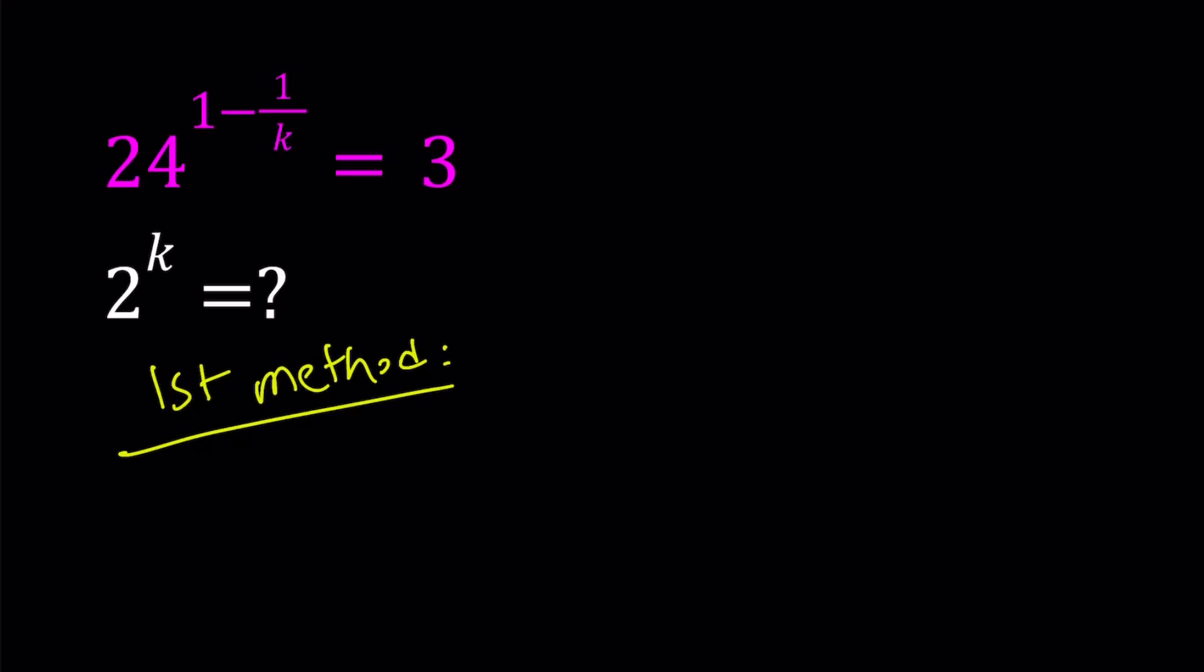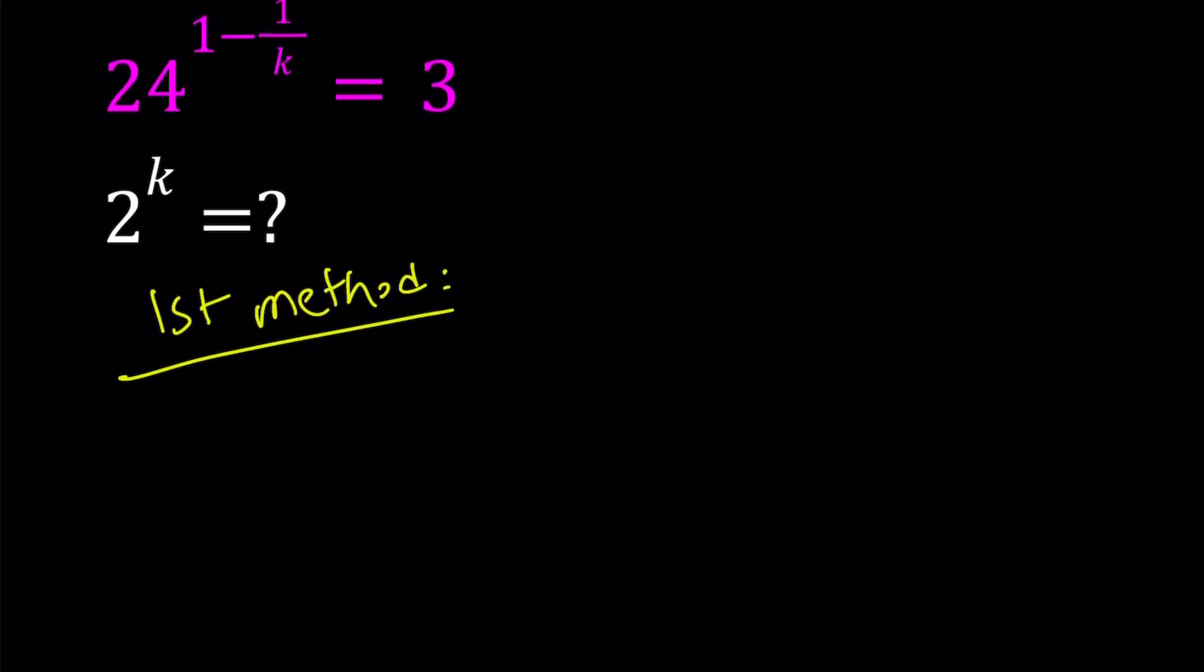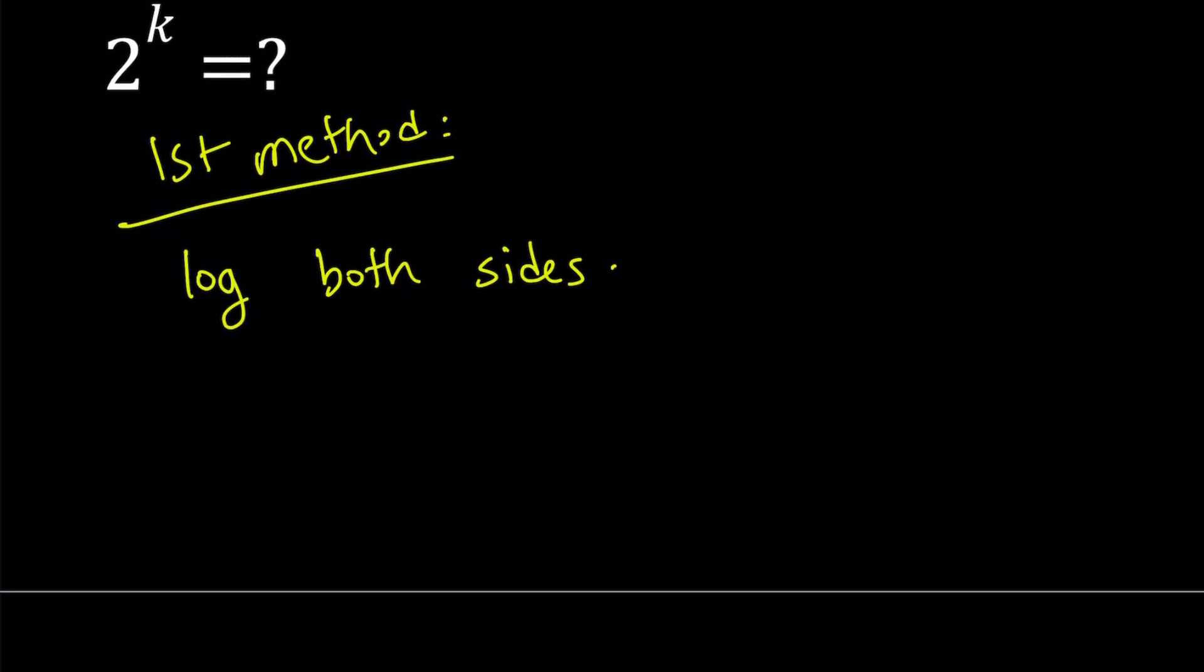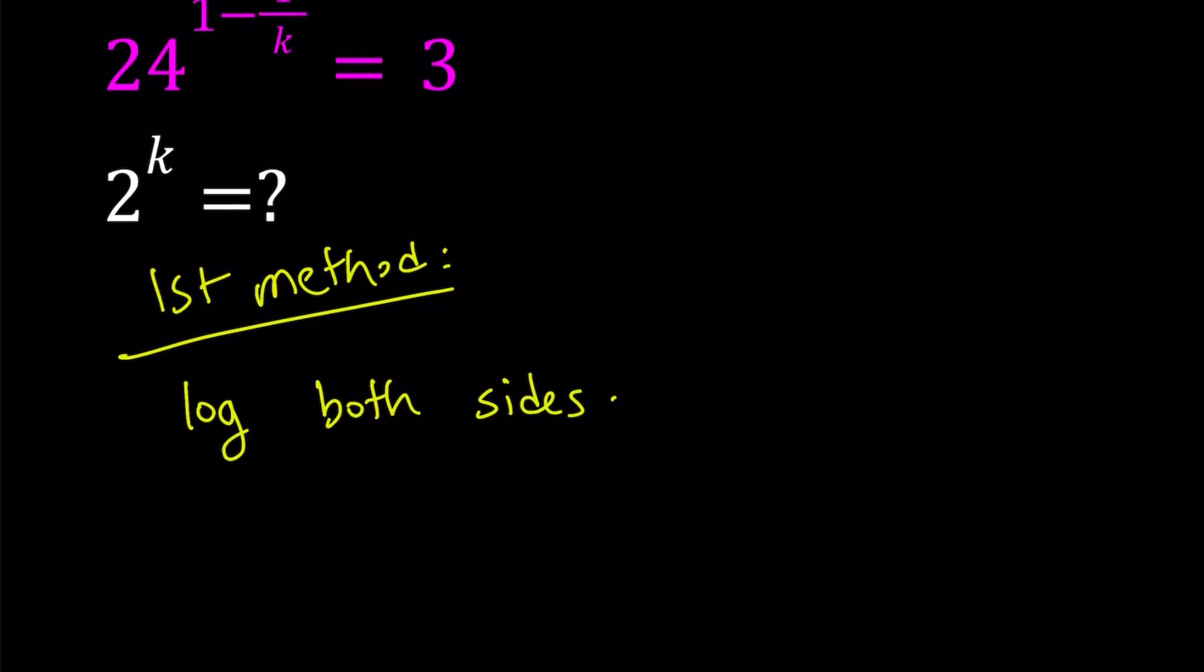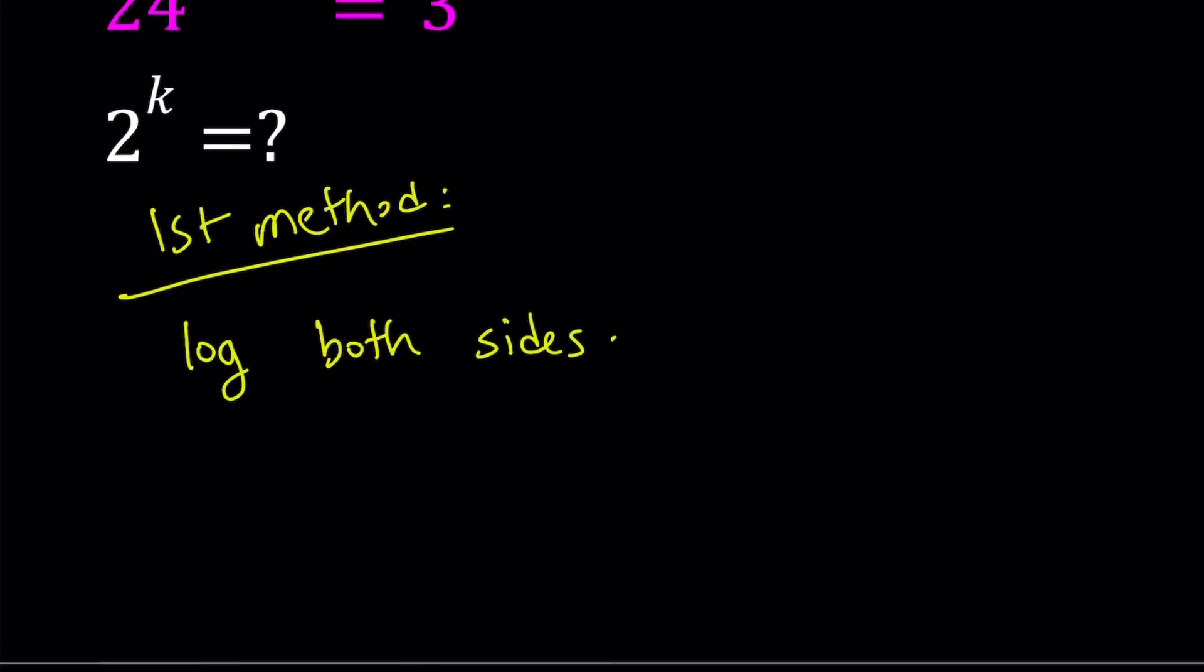So we have this given expression. How can I manipulate it to get 2^k? For my first method, I'm going to log both sides. And the base doesn't matter. You can use any base, but I'm going to use base 10. But again, you can use any base. Why not base 2 or base 3? You could definitely do that. Since we have the 3 and 2 as the bases, you could also use that. You could even use base 24. Again, it doesn't matter.